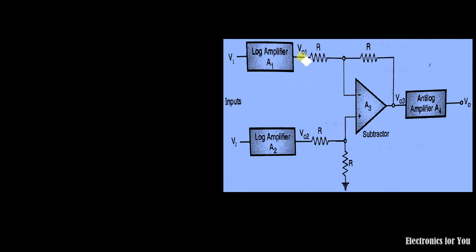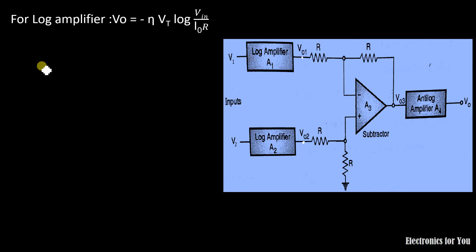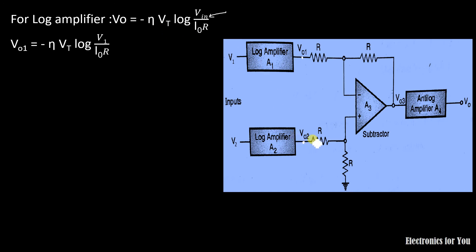Considering the same diagram, we need to find V01 and V02, the outputs of the two log amplifiers. For V01, we use the log amplifier output formula and replace Vin with V1. Similarly, to find V02, we replace Vin with V2. These give us the two log amplifier output equations.